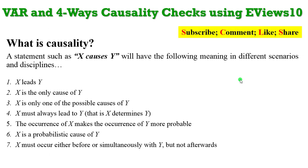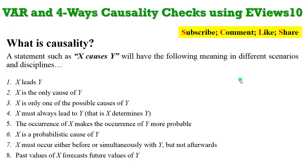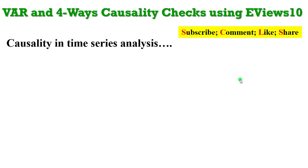X must occur either before or simultaneously with Y, but not afterwards. You are simply saying that the future of X cannot predict the past, so X must always occur before Y. Then the past values of X forecast future values of Y. So these are the different interpretations of causality in different scenarios and disciplines. Now let's talk about causality in time series analysis.